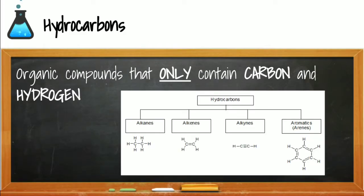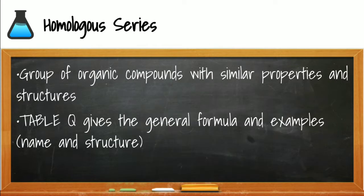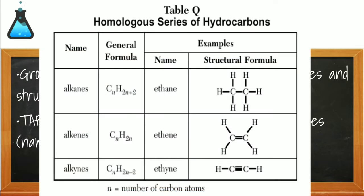Hydrocarbons are a special class of organic compounds that contain only carbon and hydrogen, as you can pretty much tell from their name. The homologous series are a group of hydrocarbons that have similar properties and similar structures. We are going to use reference table Q to help us name these various compounds. Here on reference table Q, there are three different categories within the hydrocarbon series.